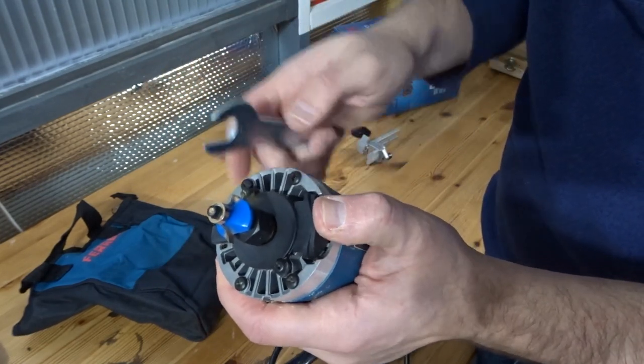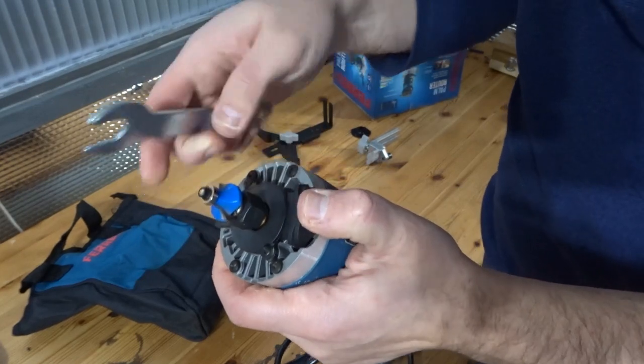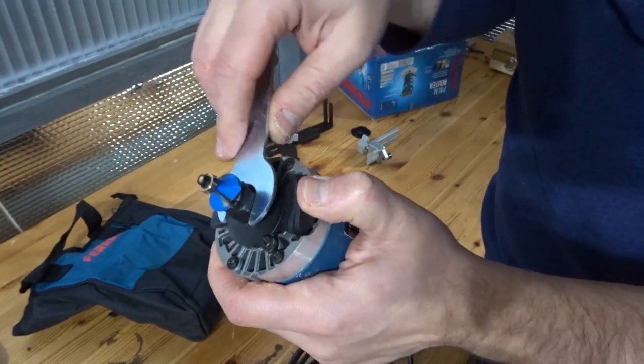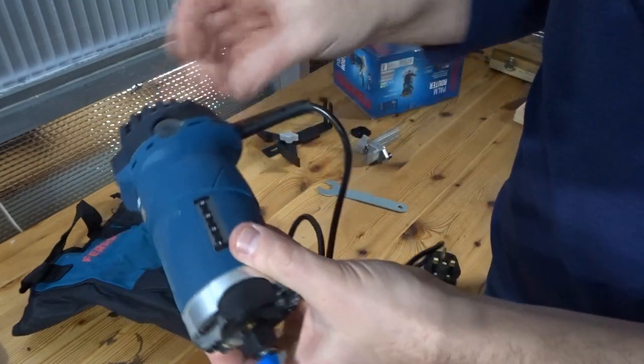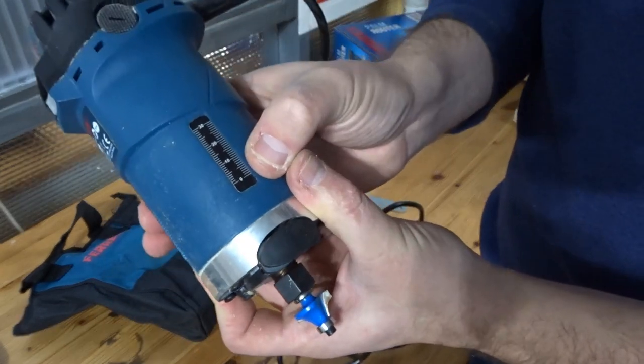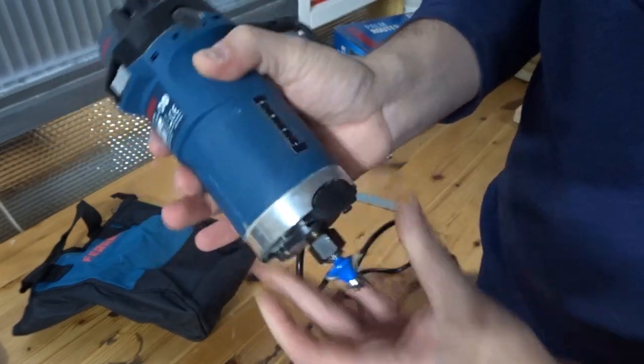You push this in to keep everything still because that will spin. You push this in to keep it still and then you can undo that. So you've got your little gauge here from 0 to 30 millimeters.